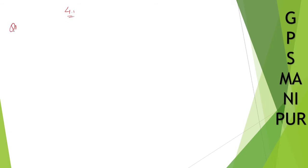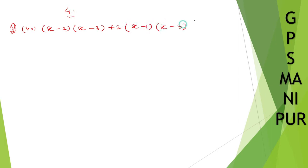Now we are doing exercise 4.1, question number one, roman number seven. The question is: x(x minus 2) equals 3(x minus 3) plus 2(x minus 3) equals 3(x minus 1)(x minus 2).